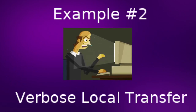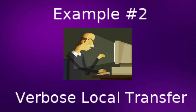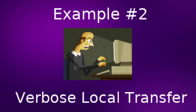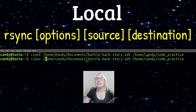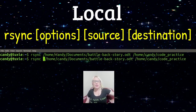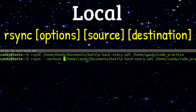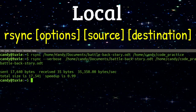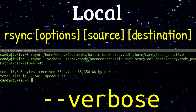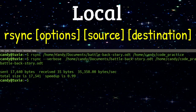Example two, a verbose local transfer. I'm going to redo the same local transfer that I just did, only this time I'm adding the verbose option. The verbose option, dash v or dash dash verbose, is going to provide you with more information, as you can see here.